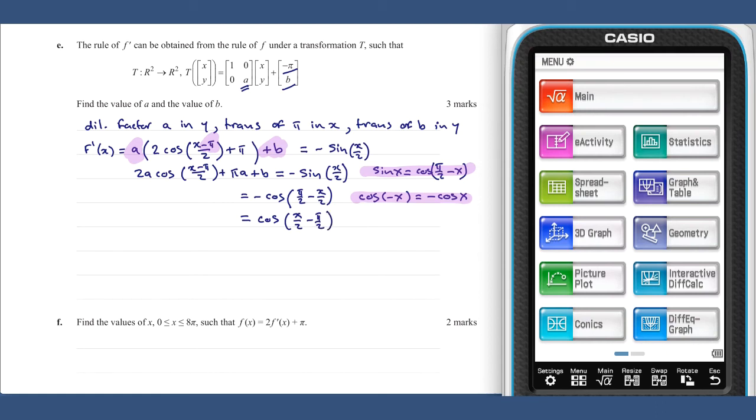At this point we can see that our left and right hand sides both contain the expression cosine x on 2 minus pi on 2 or equivalent, and that means we can equate. So we know that 2a equals 1 and pi a plus b equals 0, giving us a equals a half and b equals minus pi a which is minus a half pi.